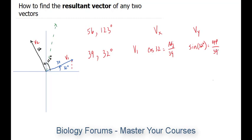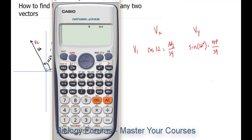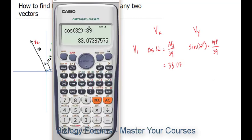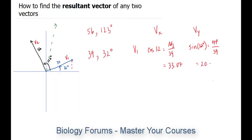If we rearrange these two equations, you'd have to multiply 39 by cosine 32, and that would give you the adjacent. So let's do that on our calculator. Cosine 32 times 39 gives us 33.07. And similarly, sine of 32 times 39 gives us an answer of 20.66.